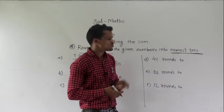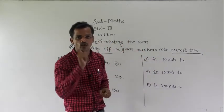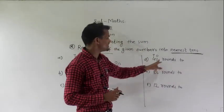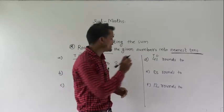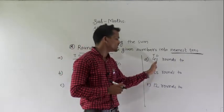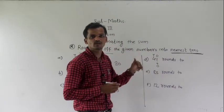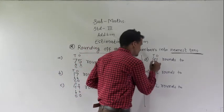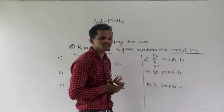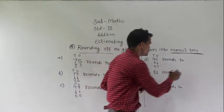For example D: 41 rounds to nearest 10. The ones place digit in 41 is 1, which is smaller than 5. So this number will be rounded down. Write 0 under the 1, and the tens place digit remains as it is. So 41 rounds to 40.